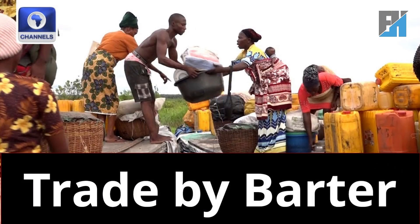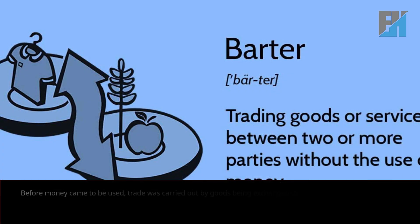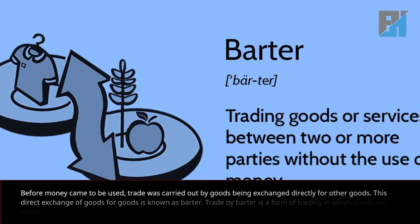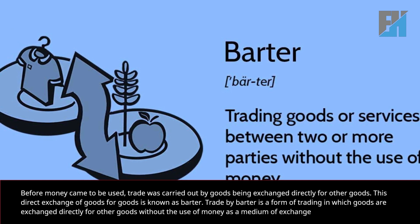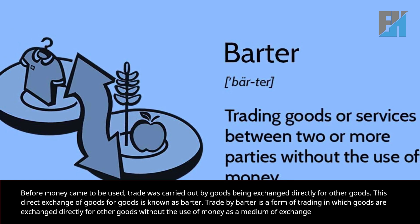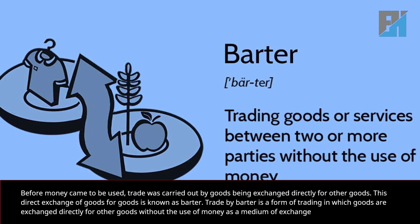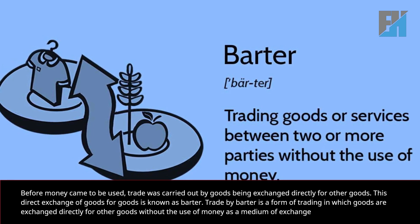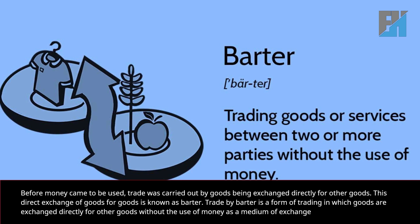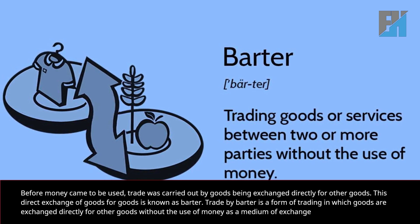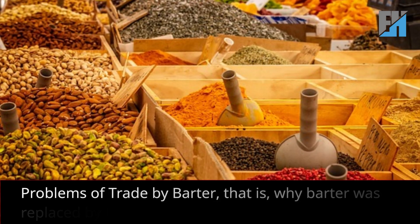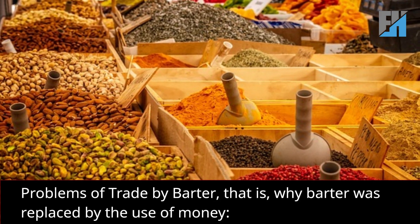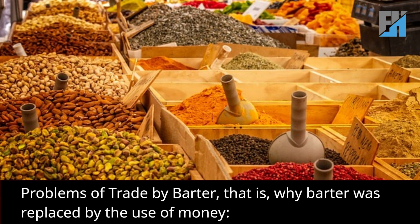In today's topic we would be discussing trade by barter. Before money came to be used, trade was carried out by goods being exchanged directly for other goods. This direct exchange of goods for goods is known as barter trade. Trade by barter is a form of trading in which goods are exchanged directly for other goods without the use of money as a medium of exchange.